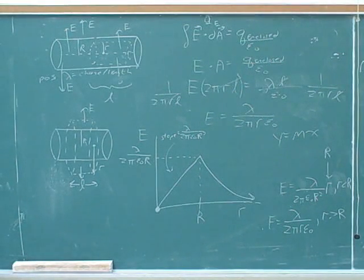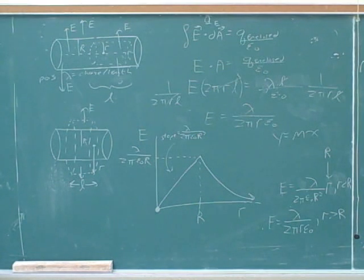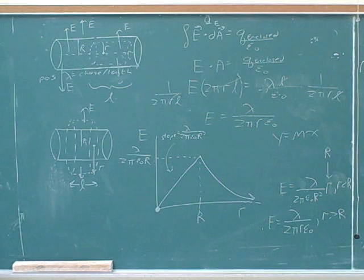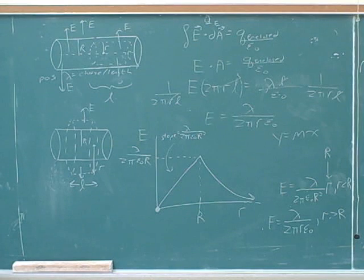How about part D? Okay, so now find the magnitude and direction of the force on an electron. So at a distance r equals 2R, so at a point outside.